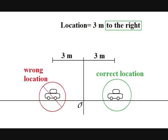So now we are discussing a quantity, the location, and in order to define this quantity, we need two pieces of information: the distance from the origin and the direction away from the origin, whether it is to the left or to the right.